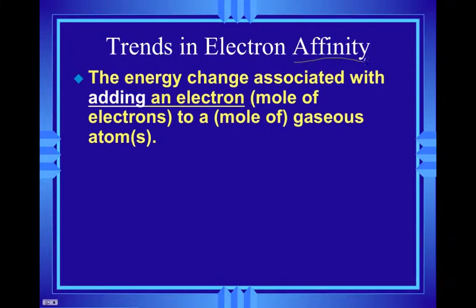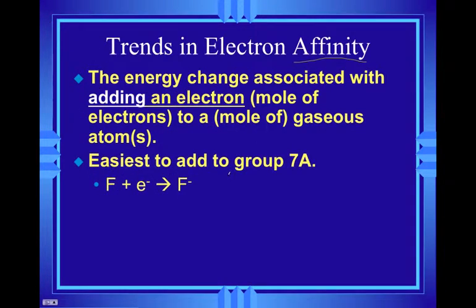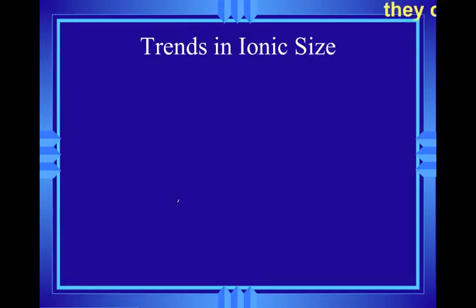Something we haven't talked about is electron affinity, which is the energy change associated with adding an electron, adding a mole of electrons to a mole of gaseous atoms. Those elements in group 7A, like the halogens, fluorine, are going to have the greatest energy change associated with this. It's going to increase left to right because sodium doesn't want it, so the energy change is not going to be as great. It's also going to decrease moving down the table.